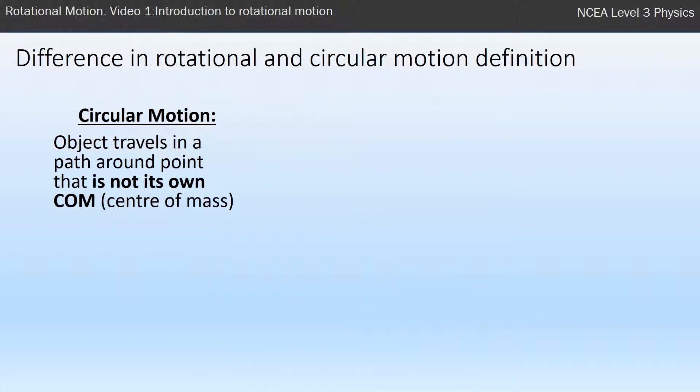So this year we're going to separate these ideas of circular motion and rotational motion out. Circular motion we're going to give a definition of an object traveling around a path around a point that is not its own center of mass.